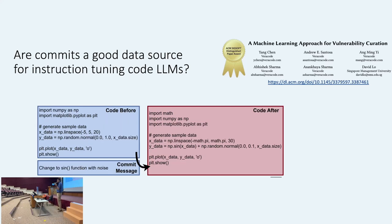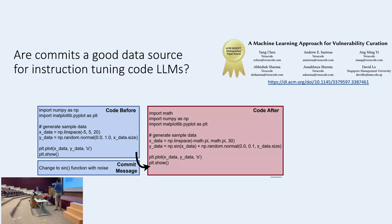Most models including GPT-4 or Llama are trained at one point in time — they don't have the evolutionary history of commits. In my previous startup, we actually used commit data effectively, as shown in our 2020 paper on machine learning approaches for vulnerability curation. Commits are a very good source of instruction tuning for code LLMs: you have code before, code after, and the commit message as the instruction. Many commit messages are not great quality, but if you filter for good ones, this is really the format needed to train a bug-fixing model.